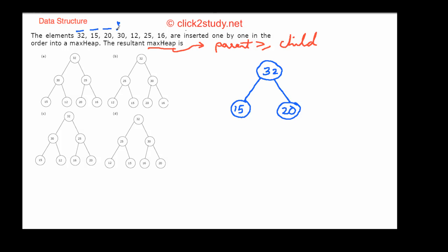Next we insert 30. It goes at the next available position as the left child of 15. But this creates a problem — the parent 15 is no longer greater than or equal to the child 30. So we swap the parent and child: 30 moves up and 15 moves down.